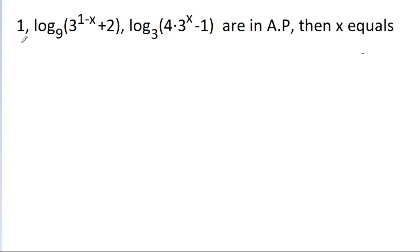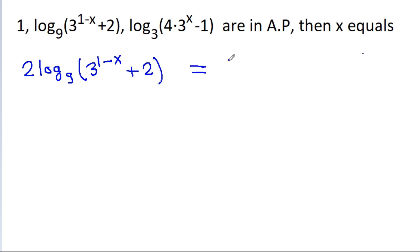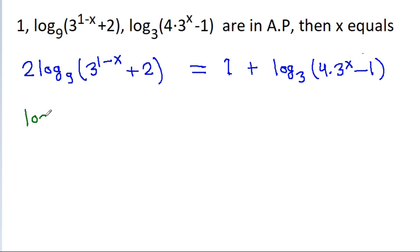So, if we have three terms in AP, that means two times the middle term — log base 9 of 3 power (1 minus x) plus 2 — is equal to the first term, which is 1, plus the third term, which is log base 3 of 4 into 3 power x minus 1. We know that log base a^n of x equals (1/n) times log base a of x, and 9 is 3 squared.